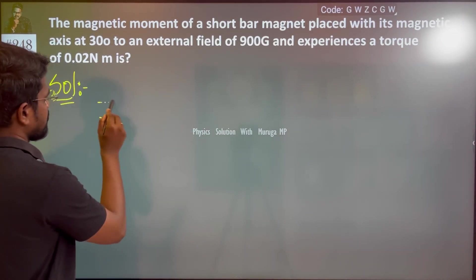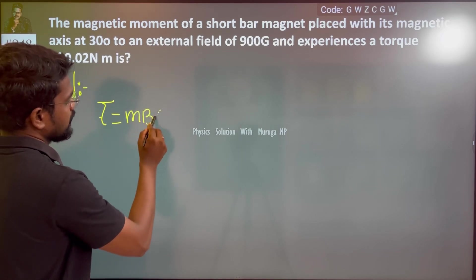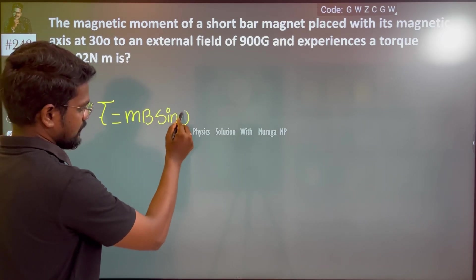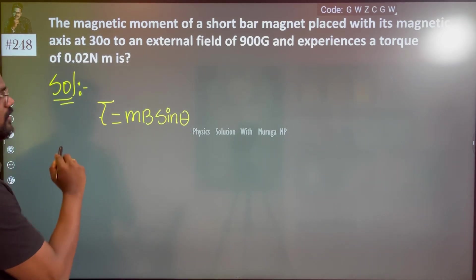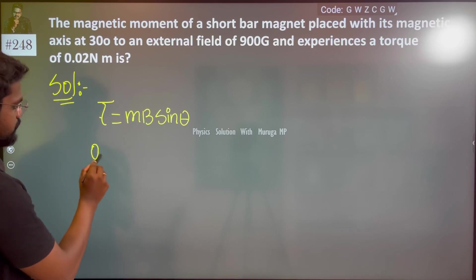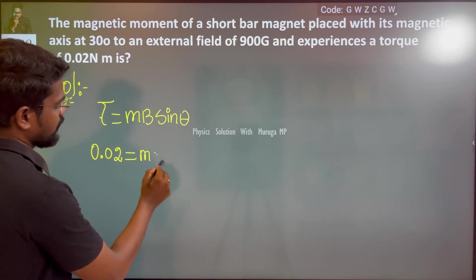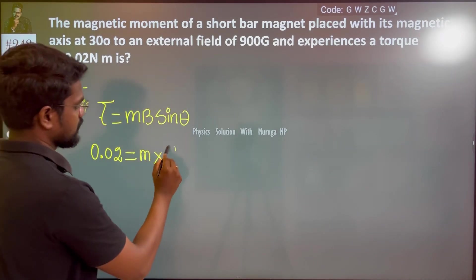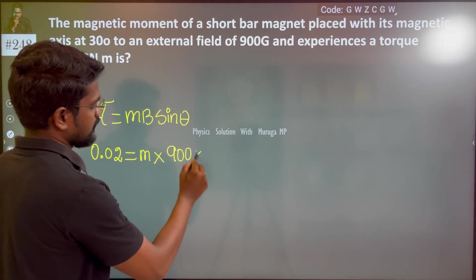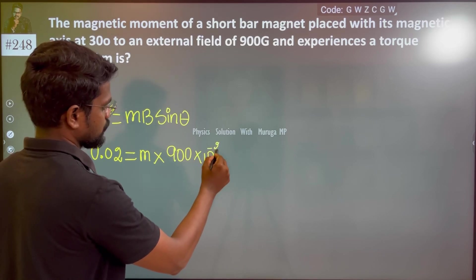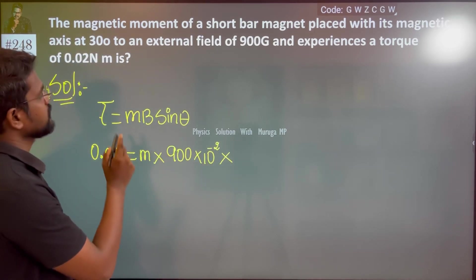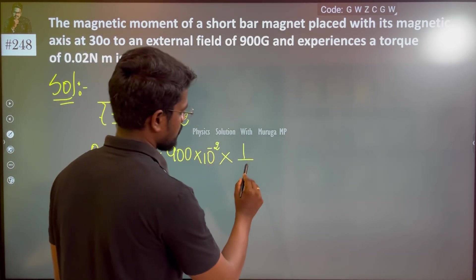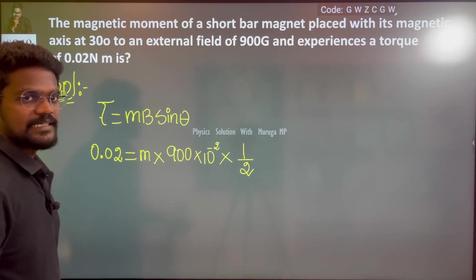The torque is equal to MB sin theta, where torque is 0.02, M we need to find, magnetic field is 900 Gauss which is 900 into 10 to the power minus 4, and sine 30 degrees is 1 by 2.